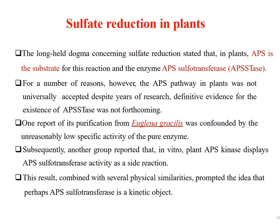The long-held dogma concerning sulfate reduction stated that in plants APS is the substrate for this reaction and the enzyme is APS sulfotransferase. However, the APS pathway in plants was not universally accepted. Despite years of research, definitive evidence for the existence of APS sulfotransferase was not forthcoming — one report of its purification was confounded by the unprecedented low specific activity of the pure enzyme. Subsequently, another group reported that in vitro, plant APS kinase displays APS sulfotransferase activity as a side reaction, prompting the idea that APS sulfotransferase might be a kinetic artifact.